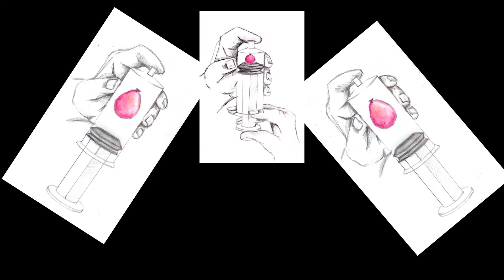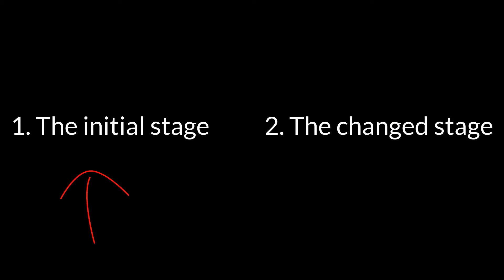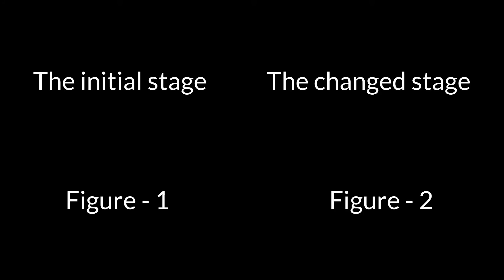You will get the link to these tutorials in the description box. From those tutorials, we got two stages for each law individually. Number 1 is the initial stage and number 2 is the changed stage. We will let the initial stage be figure 1 and the changed stage be figure 2.